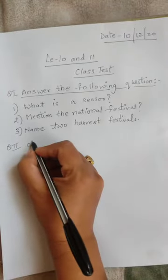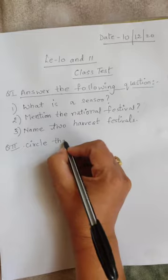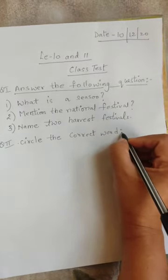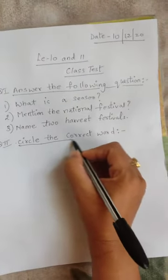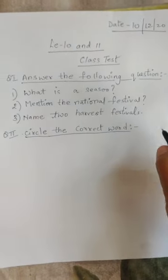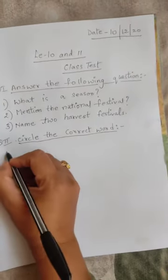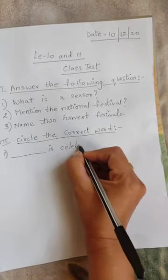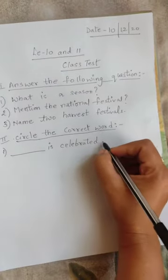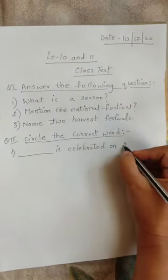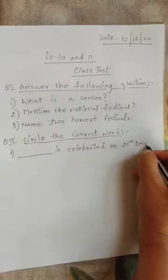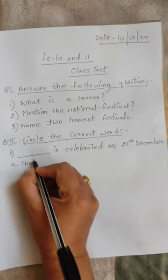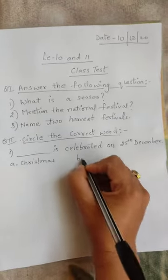Question number two — circle the correct word. I'm giving you the question and the options; you have to write the correct answer. The first one is: dash is celebrated on 25th December. Your two options are: Christmas or Eid.